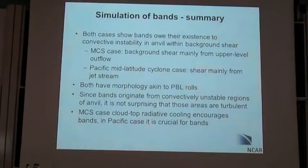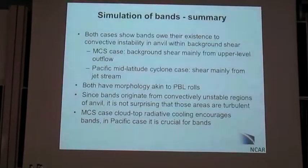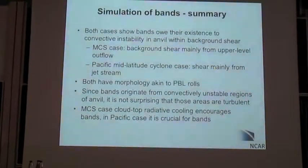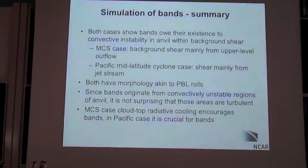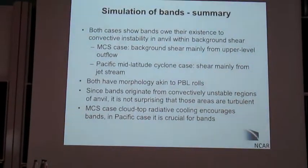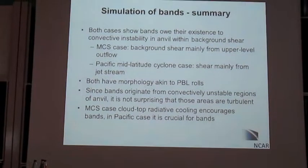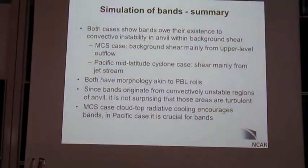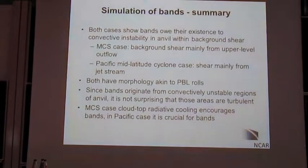In the Pacific mid-latitude cyclone case, which we didn't have a chance to go over, the shear was mainly induced from the jet stream. But in the MCS case, the shear mainly came from the superposition of the anticyclone outflow and the jet. Both of these have morphology very similar to the boundary layer rolls.